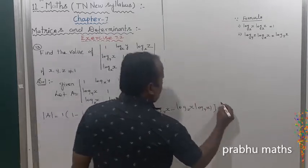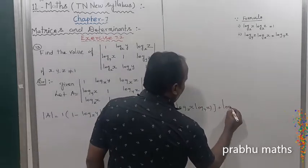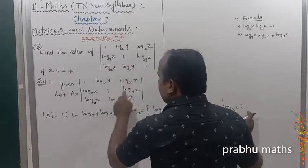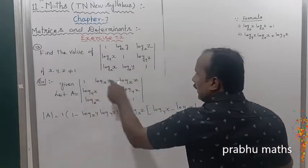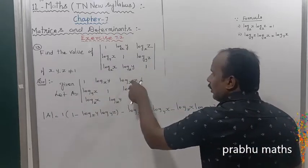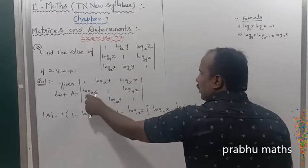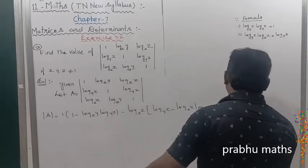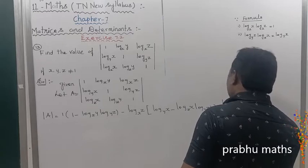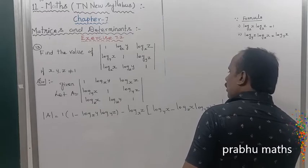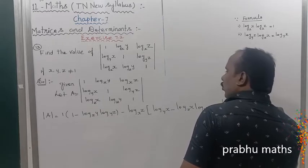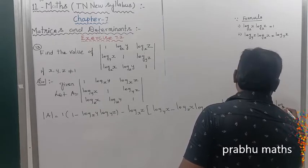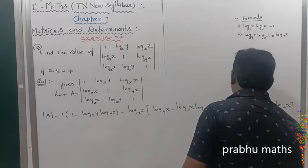Plus the last term: log x z into — the entire column, entire row, entire column closed — the first multiplication log y x, log z y, minus log z x.